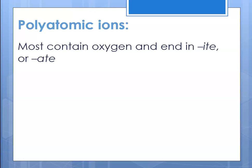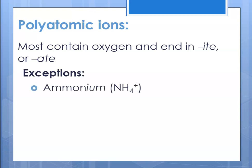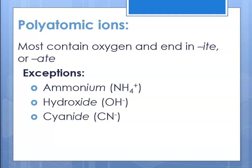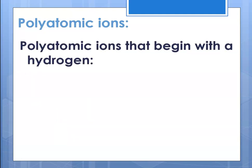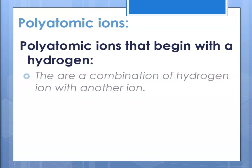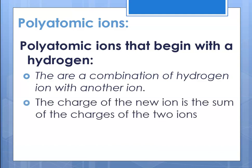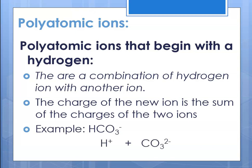Most polyatomic ions contain oxygen and are called oxyanions — those end in '-ite' or '-ate'. Exceptions are ammonium (NH₄⁺), hydroxide (OH⁻), and cyanide, which do not have that '-ate' ending. There is another group of polyatomic ions that begin with a hydrogen — they're a combination of a hydrogen ion with another ion, and the net charge is the sum of the two ions. For example, the hydrogen carbonate ion has a charge of H⁺ plus CO₃²⁻, so the overall charge is negative one. That's all for now — this is Ms. Augustine, signing off.